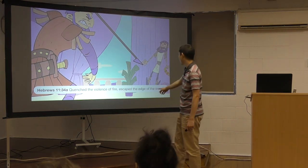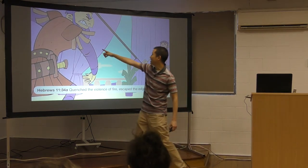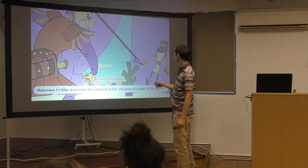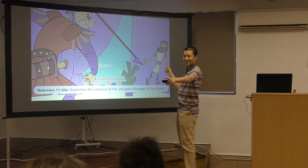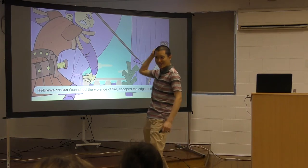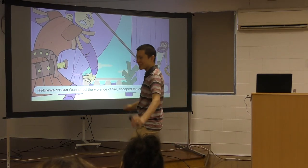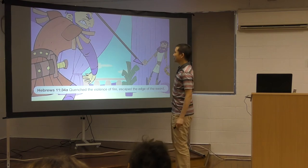Quench the violence of fire. Escape the edge of the sword. Who's this? This is King Saul. And who's that? David. David. That's right. Anyway, King Saul. Through the spirit, David, he had to dodge it. Through faith, he escaped.